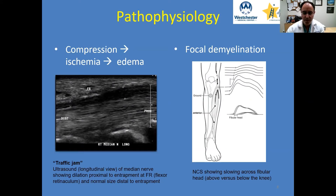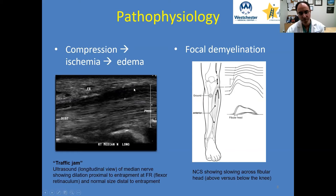If we take a look at an ultrasound, this is looking at the median nerve in a longitudinal view. Proximal is towards the right side of the picture. The FR here refers to the flexor retinaculum, which is a connective tissue band that basically forms the roof of the carpal tunnel and is what we open up during surgery to decompress the nerve. You can see that just upstream or proximal, there's a dilation of the nerve between these two markers and then a more thinning or normal diameter distally. You can think of this almost like a roadblock where there's a traffic jam and traffic is building up upstream.